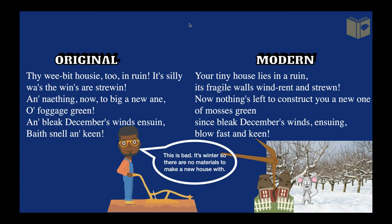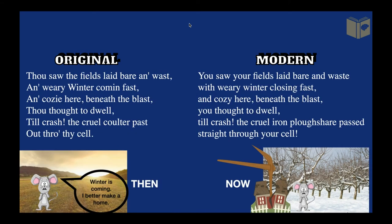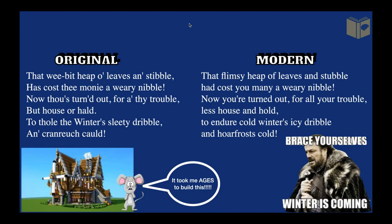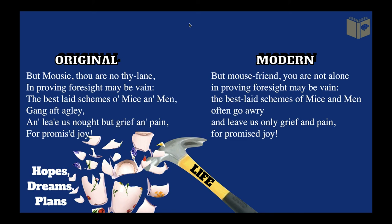As the farmer has destroyed the mouse's house, he comments on this: you've built this house and I've destroyed it, and winter is coming. Because of that, you're in a sticky situation — there are no materials left to make a new house. In autumn you thought: 'winter is coming, the trees are going bare, I'd better build a cozy little house for winter.' But I've destroyed it, and your house which took ages to build is now rubble.